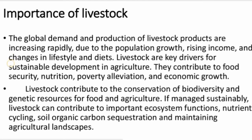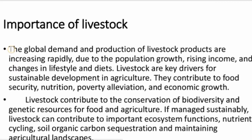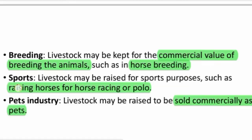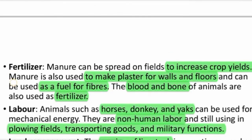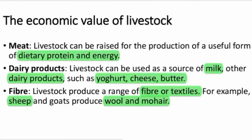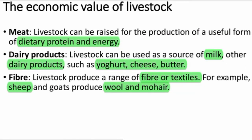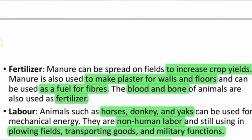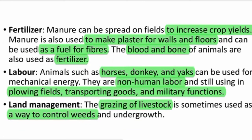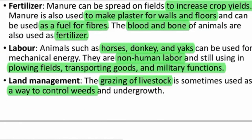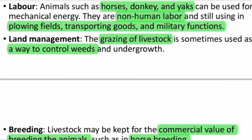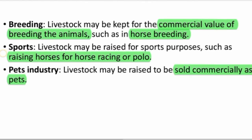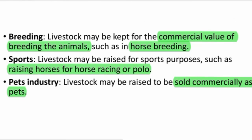The main area counts in: meat, dairy products, fiber, fertilizer, labor, land management, breeding, sports, and the pets industry. That's how you use livestock.